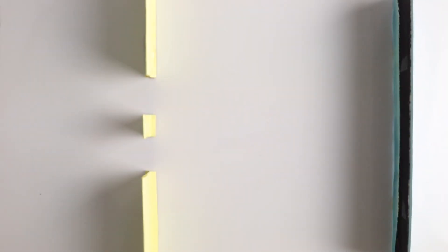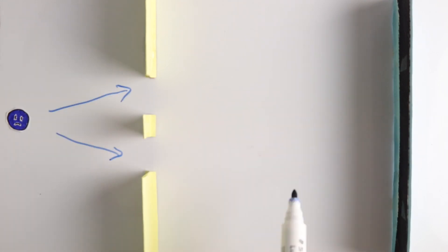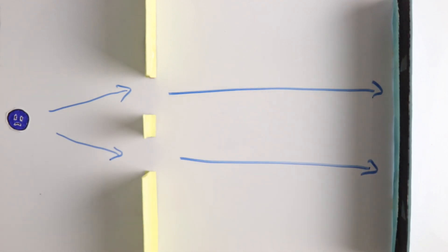It's an experiment where you have an electron coming in this side, then there are two slits that the electron can go through, and finally it hits the back wall where we mark where it lands.